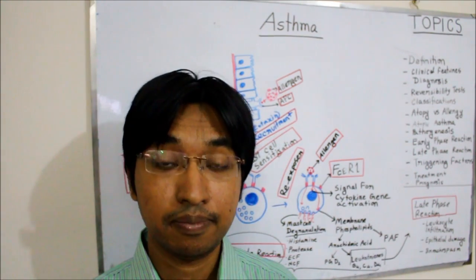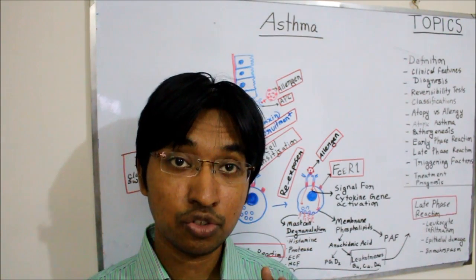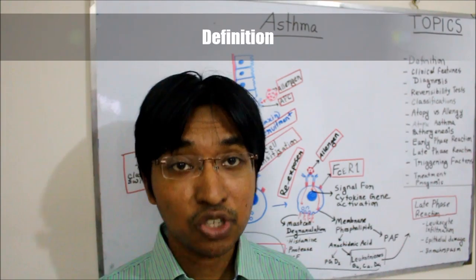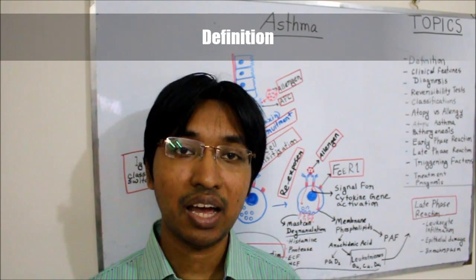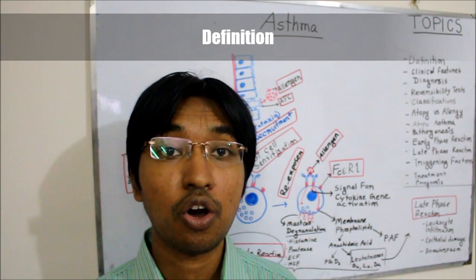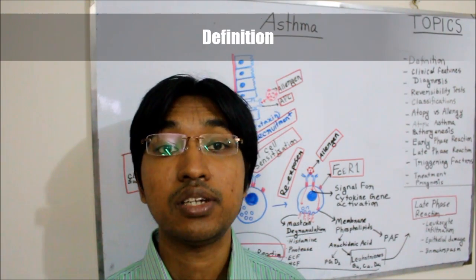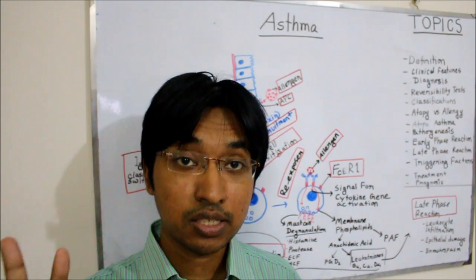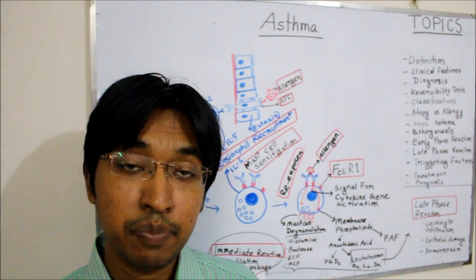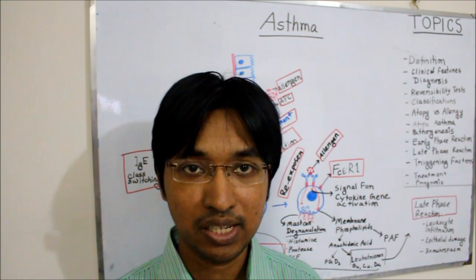What is asthma? The word asthma is derived from a Greek word that means panting, that is breathing with short, quick breaths. Asthma can be defined as a chronic inflammatory disorder of the airway that is associated with airway hyper-responsiveness, recurrent episodes of wheezing, breathlessness, chest tightness, and cough, particularly at night or in the early morning. The episodes are variable in nature, but widespread obstruction occurs and they are reversible either spontaneously or with treatment.